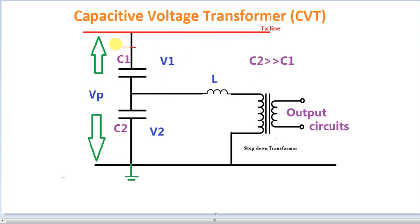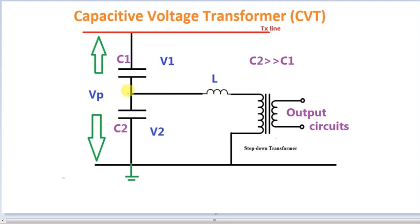If you are interested in the Capacitor Voltage Transformers — this is a potential divider. You can see the potential divider. In the center of the resistance, we will connect the voltage. That is the potential of resistance. So you can connect those two capacitors.